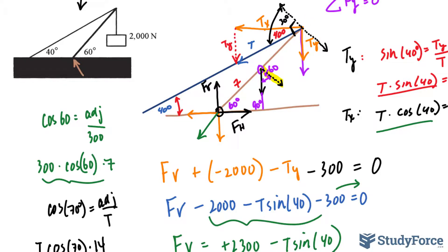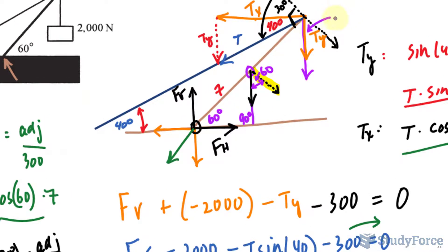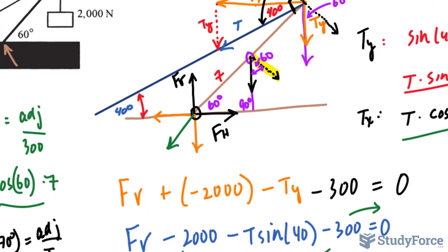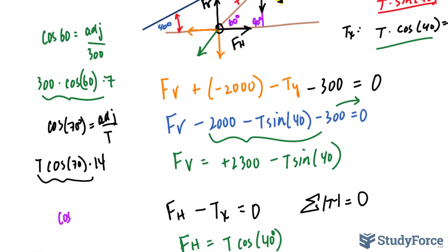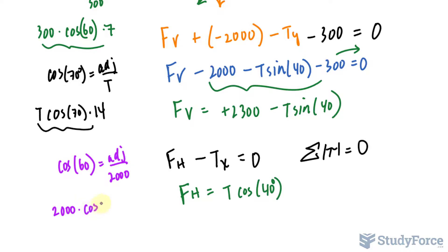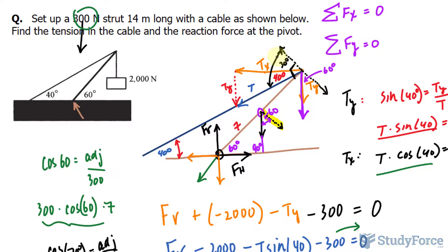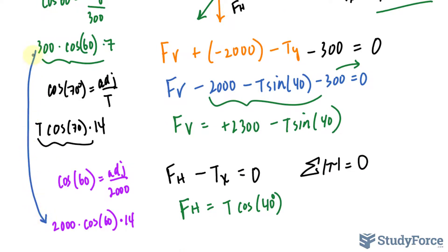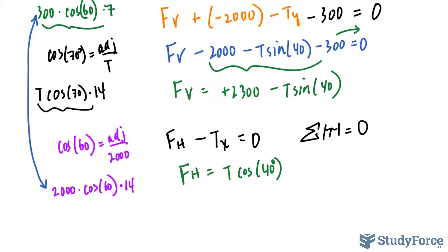Using geometry one more time for the hanging weight torque, the angle works out to 60 degrees. Using cosine: cosine 60 equals the adjacent over 2,000 newtons (the magnitude of that vector). Multiplying both sides by 2,000 and then by the radius of 14. We now have three torque expressions. Torques going one direction are positive; the opposite is negative. Setting the sum of torques equal to zero gives us our third equation.